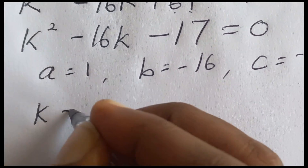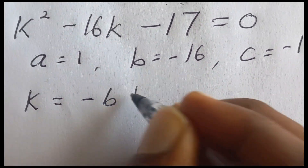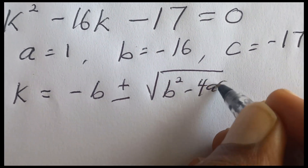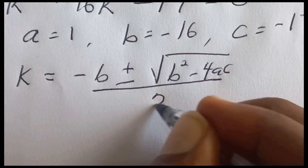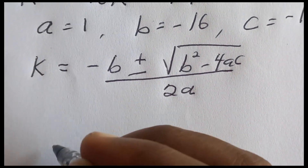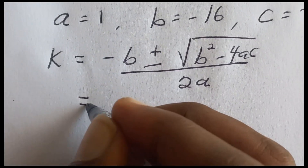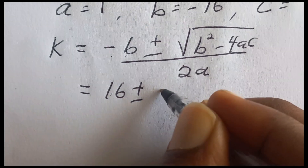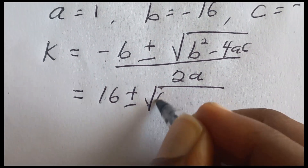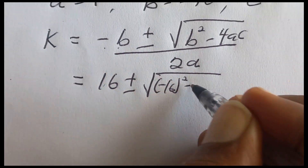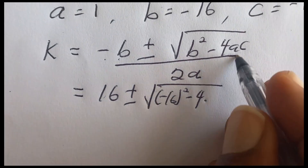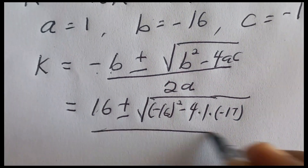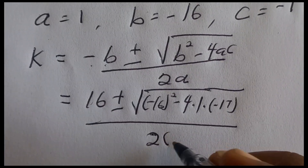So k is equal to minus b plus or minus square root of b squared minus 4ac, all over 2a. Substituting: that becomes positive 16 plus or minus square root of 16 squared minus 4 multiplied by 1 multiplied by negative 17, all over 2 multiplied by 1.